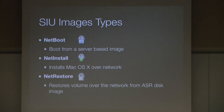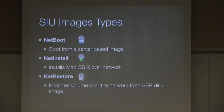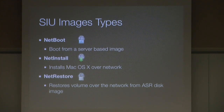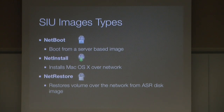System Image Utility image types: the first is NetBoot — boot from a server-based image — meaning the machine boots from the server into a complete installation of OS X with the Finder, desktop, networking, everything. It's booting completely off the network. You can use the disk or not. The reason you'd want to use the local disk is if you don't need to erase it; NetBoot uses what's called a shadow file system, so changes get written to the local disk. But when the machine reboots, those changes are lost.